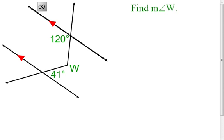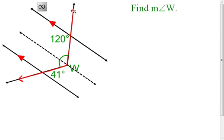In this first example, we're looking for the measure of angle W. What we really want to do is find what is the measure of that angle. And what we're going to need to do is create another parallel line.